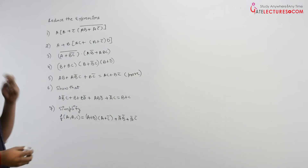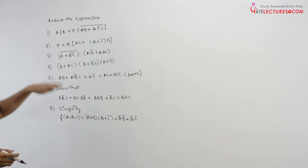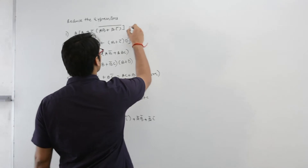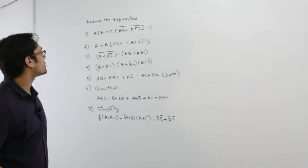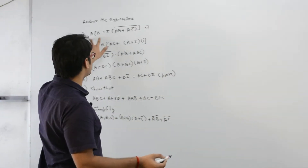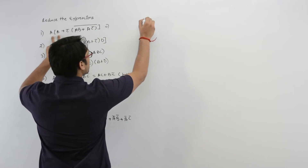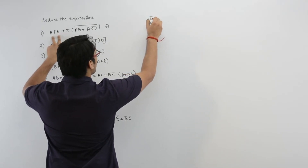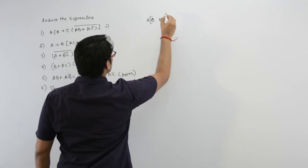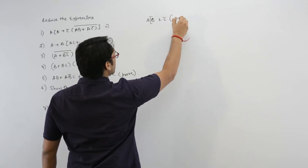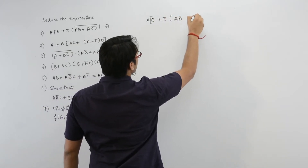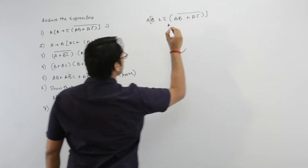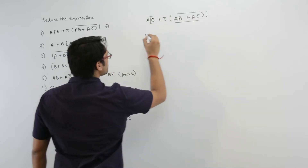Let us take the first expression here. Try to note the questions before solving it. It says reduce this expression. We can write this expression like this: a(b + c complement), then ab plus ac complement, whole complement.